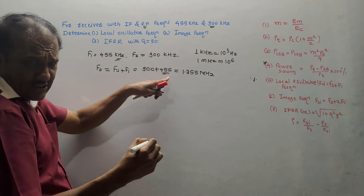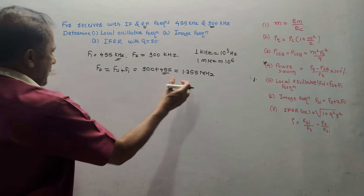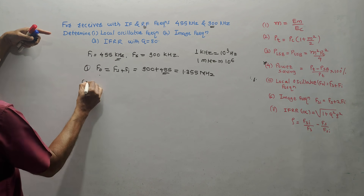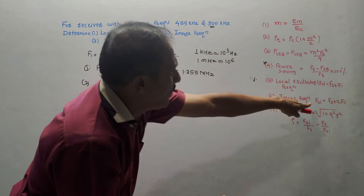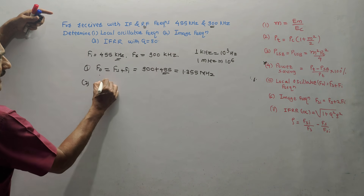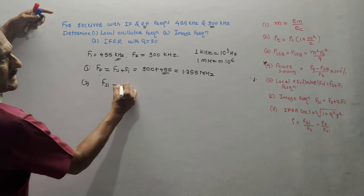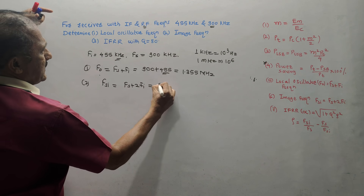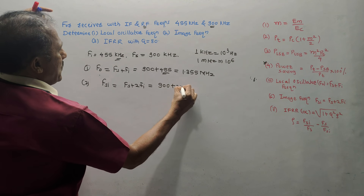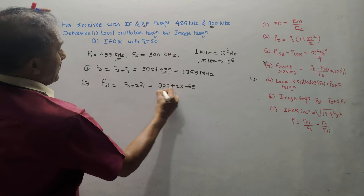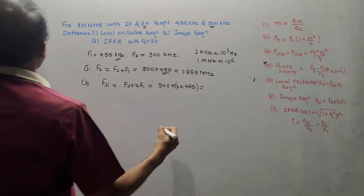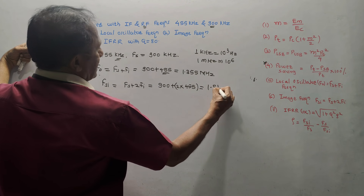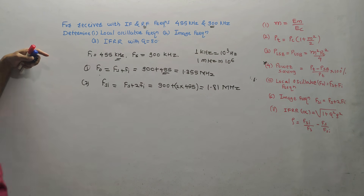Second part — image frequency FSI = FS + 2FI = 900 + 2 × 455 = 900 + 910 = 1810 kHz = 1.81 MHz.